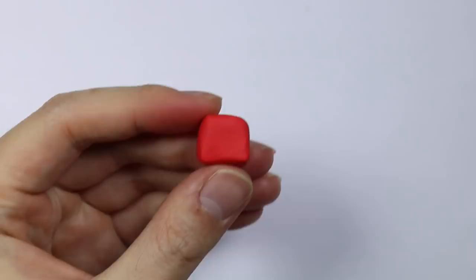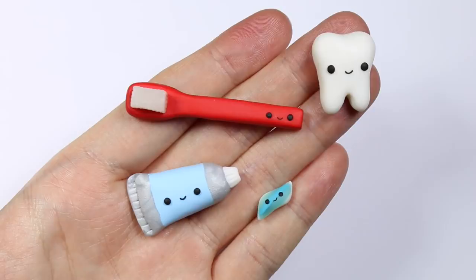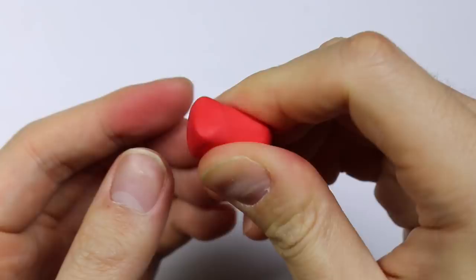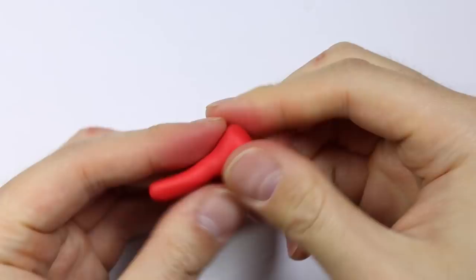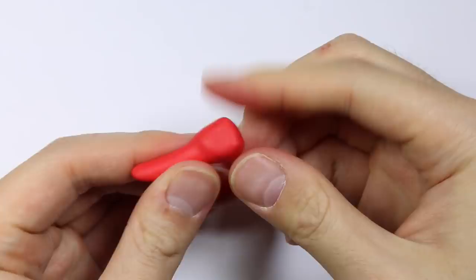So we're going to start with the toothbrush. So we're going to make the toothbrush handle. I'm taking some red clay and I'm rolling it into a fat cylinder and I'm keeping the end kind of square and flattening it out into a rectangular shape.